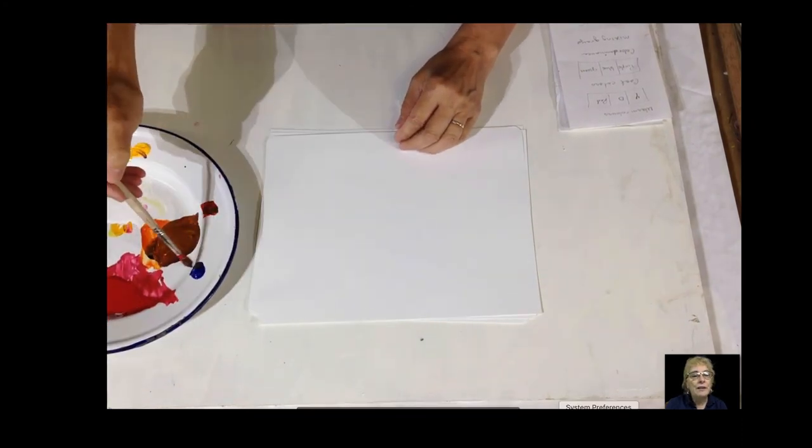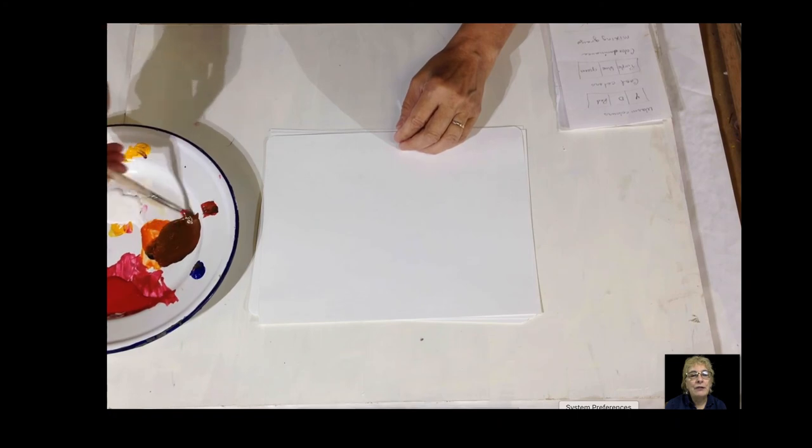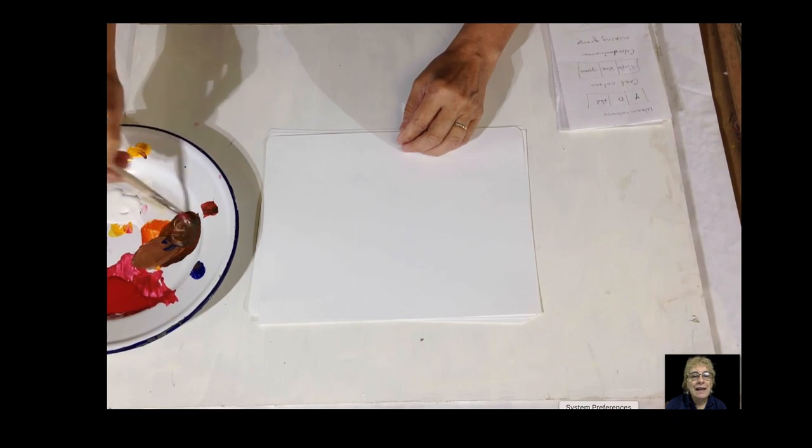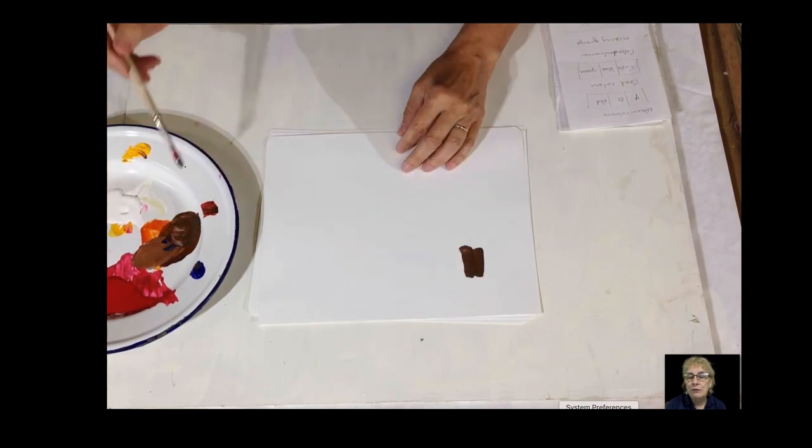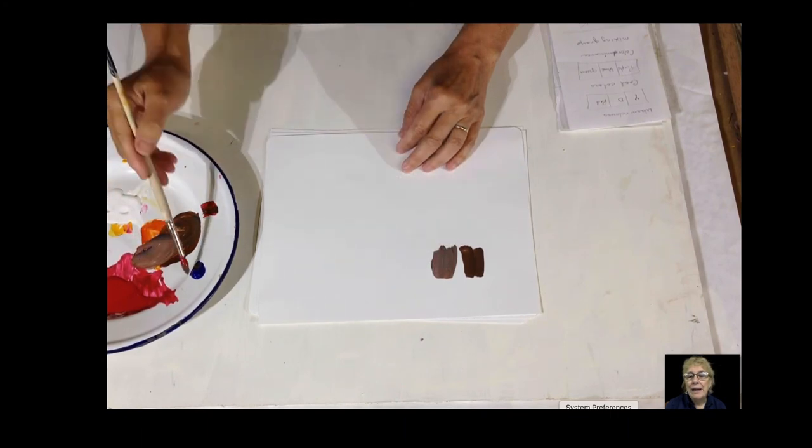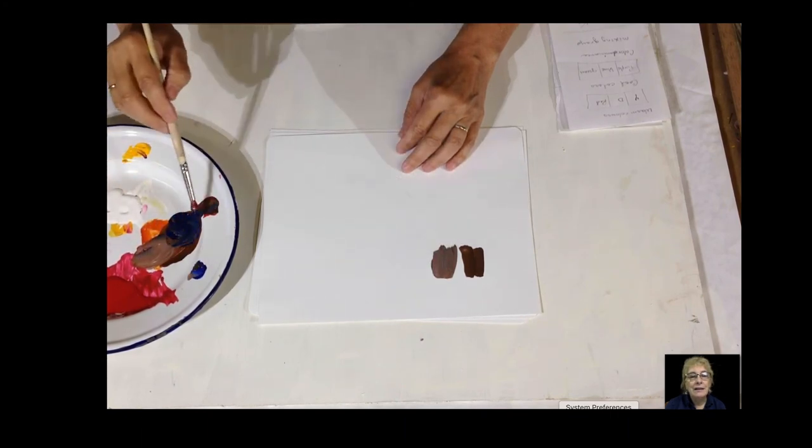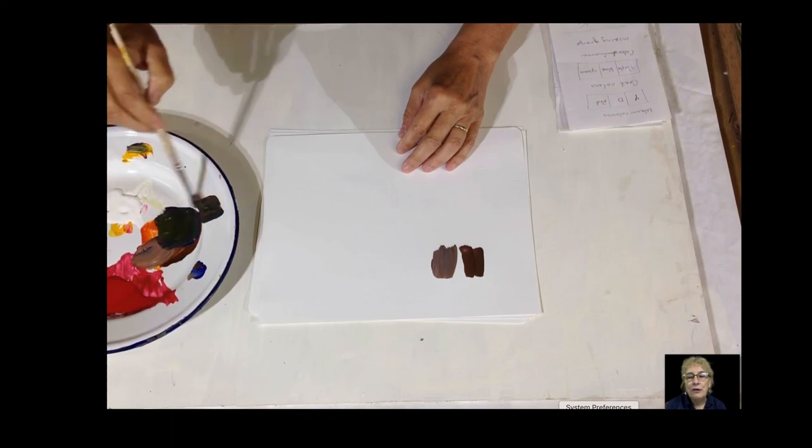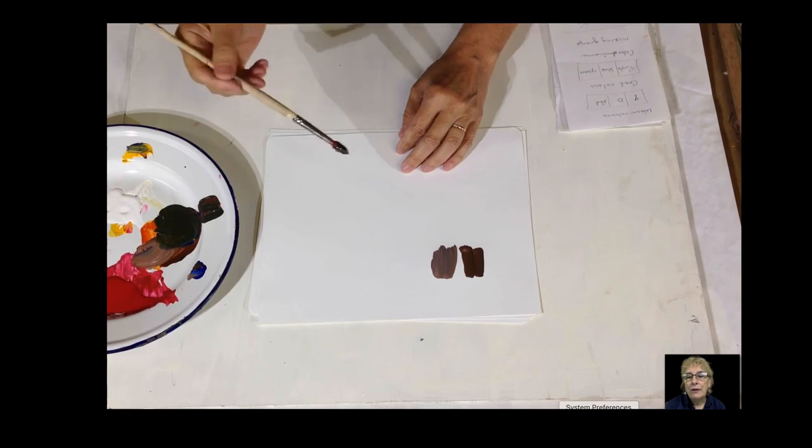So here we're going to mix browns. Now to make brown, you put yellow, red, and blue in different portions. And depending on the kind of brown you want, you can just change it up. So add a little white, add a little more blue, add a little more red, and make it darker. You could have a darker brown.